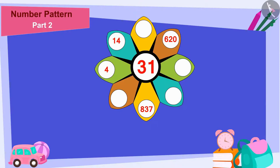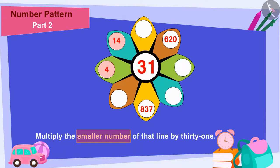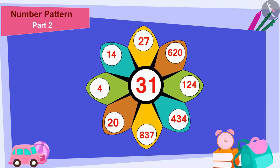There is a smaller number at one end of each line and a larger number at the other end. And to find the smaller number for each line, we have to divide the larger number of that line by 31. And to find the larger number, multiply the smaller number of that line by 31. In this way, we can fill all the blanks.